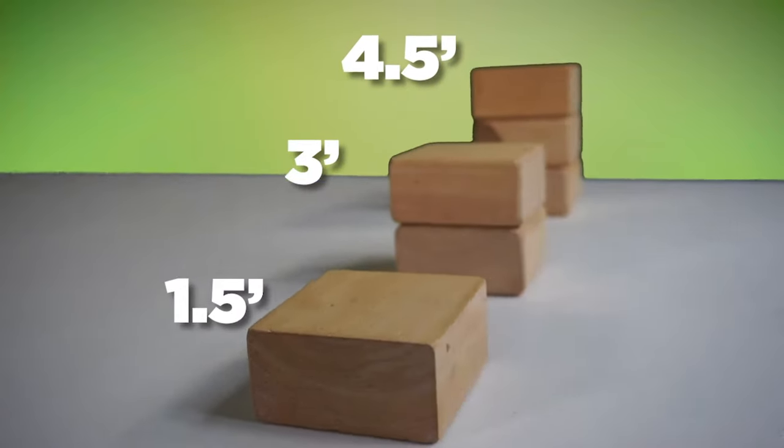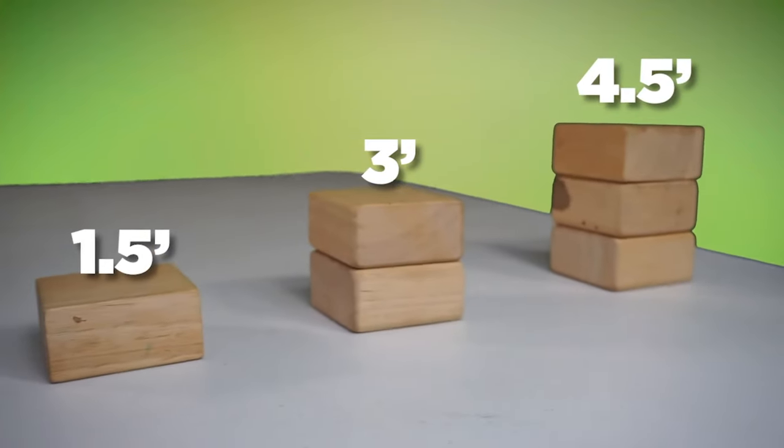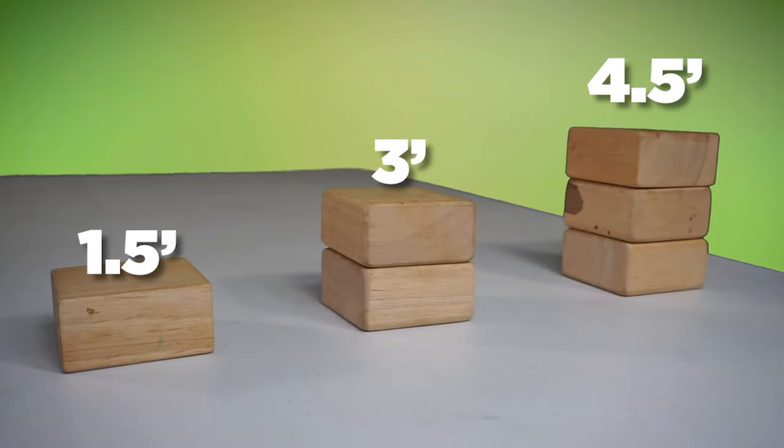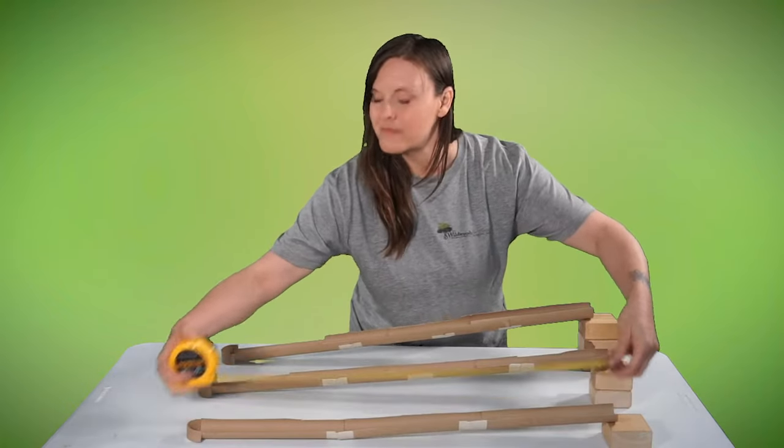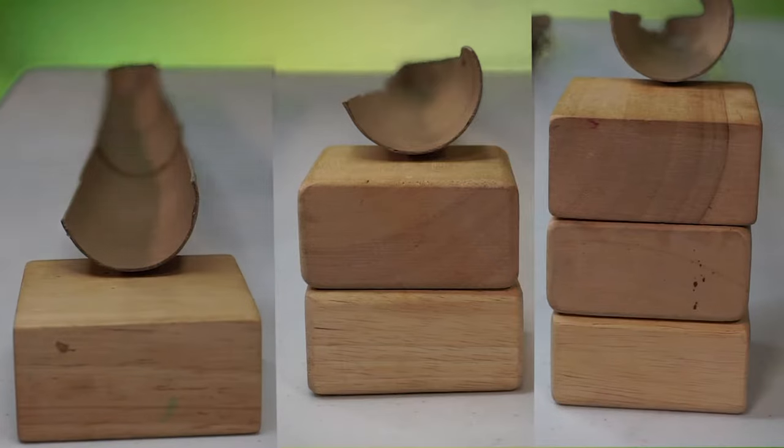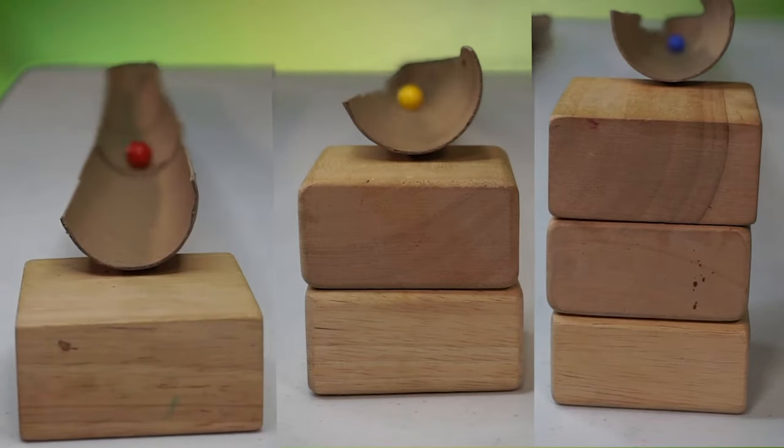Measurements tell us the distance between objects, even how fast something is moving. Let's look at these marble runs. I set up each of these marble tracks at a different height. Now, the same marble went the same distance each time, but the speed increased the taller the blocks got.